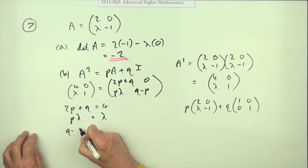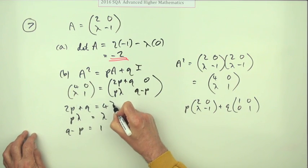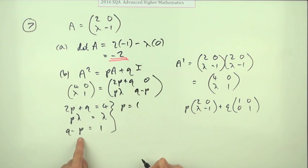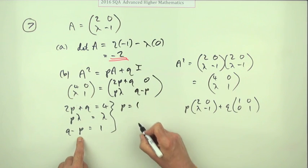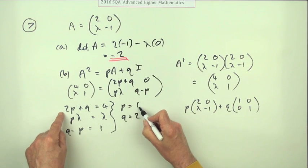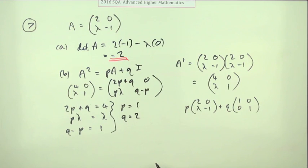2p plus q must be 4, zero is obviously zero, p lambda must be lambda, q minus p must be 1. From this line p is 1, and if p is 1, that means q must be 2. Just check it with this one: two times one is 2, and 2 is 4.